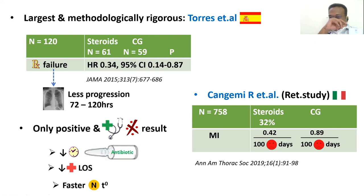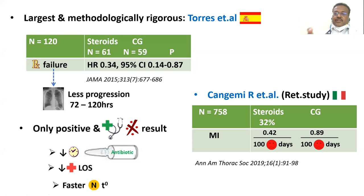An Italian retrospective study by Canjemi et al. of 758 patients — where steroids were used in 32% — showed an interesting finding: the risk of myocardial infarction was significantly lower in the steroid group at 0.42 per 100 patient days versus 0.89 per 100 patient days. A separate study examining aspirin (100 mg and 300 mg) alongside CAP found no significant benefit with 100 mg aspirin. The finding of reduced MI occurrence with steroids in CAP was notable.